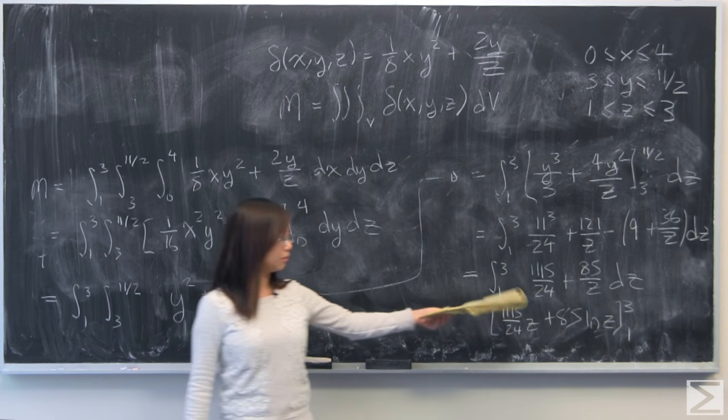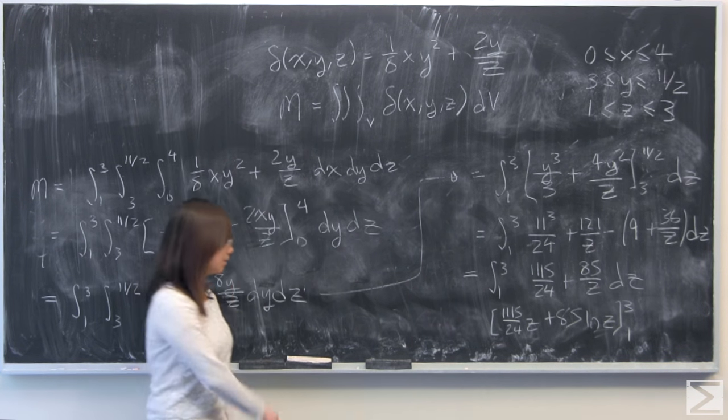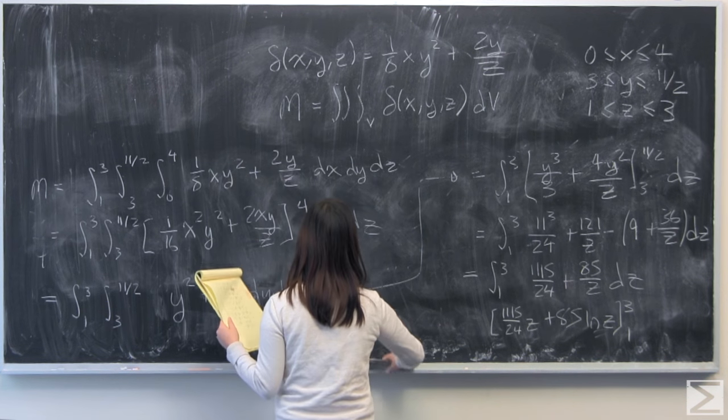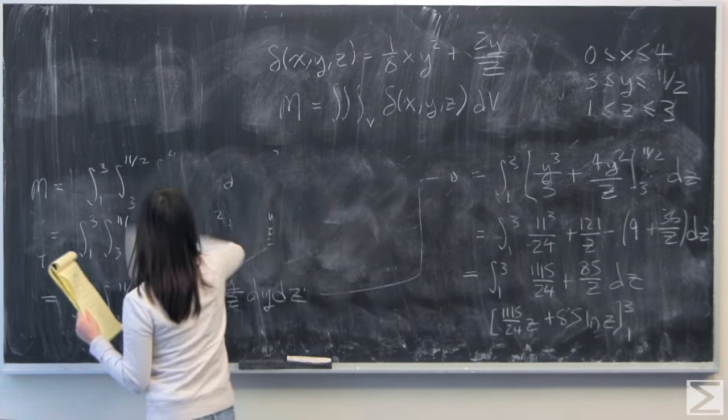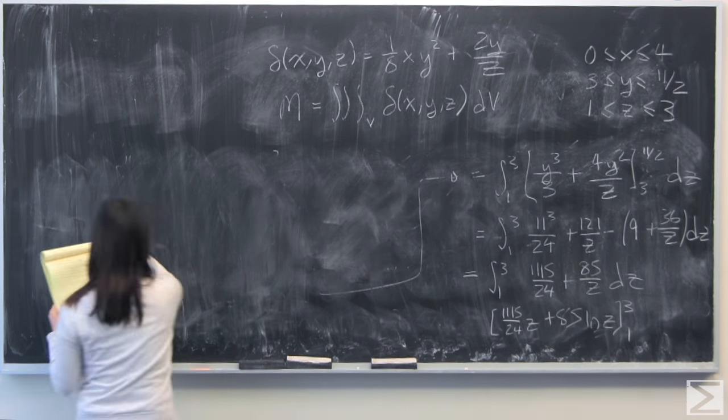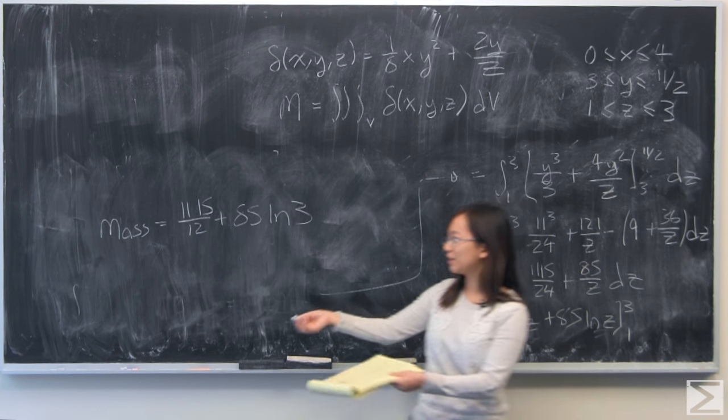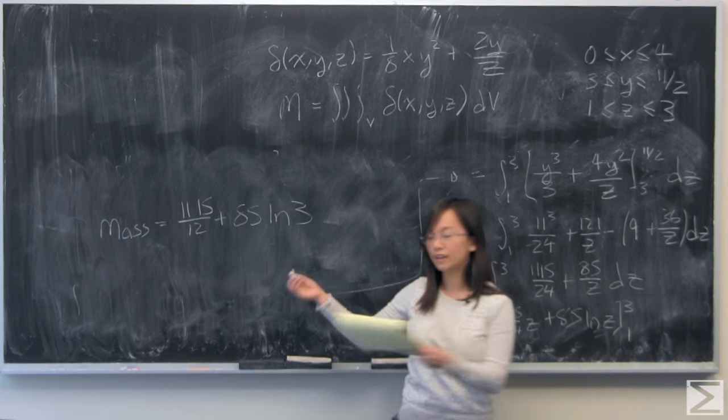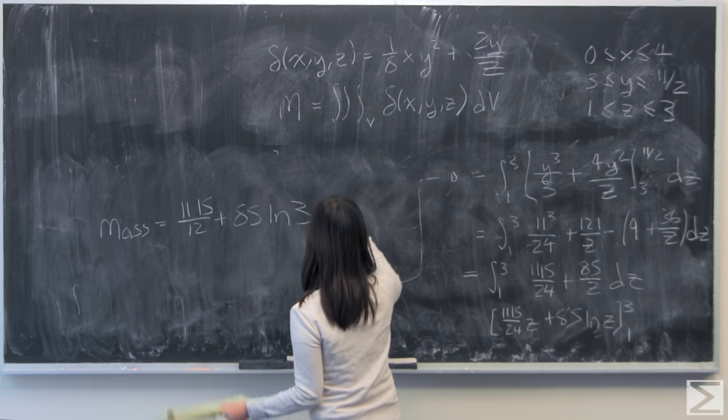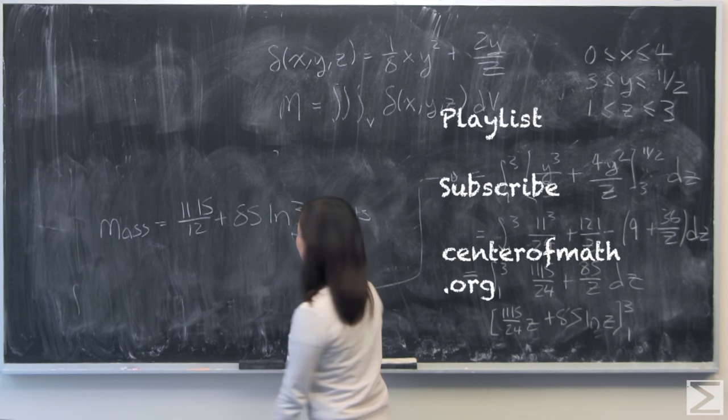Evaluate that from 1 to 3 and you will get your answer. You'll get 1,115 over 12 plus 85 ln of 3. I didn't give you units for mass, so we'll just say mass units.